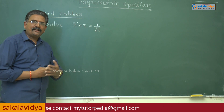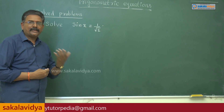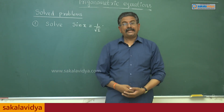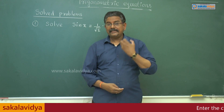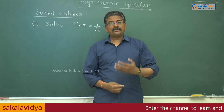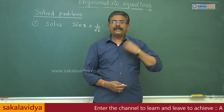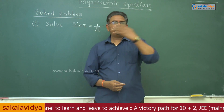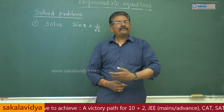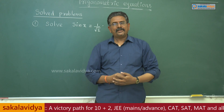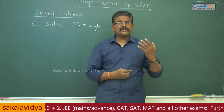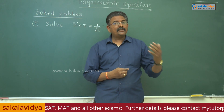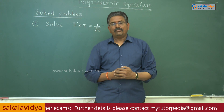The principal value alpha is equal to π/4. The general solution of sin θ = sin α is: θ = nπ + (-1)^n · α. So here, alpha = π/4; just replace alpha with π/4 and that will be the general solution. If you are asked to solve sin x = 1/√2, you have to find the general solution.